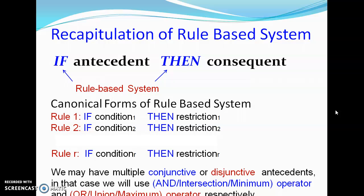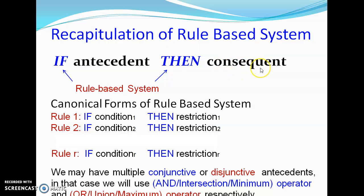To recapitulate what we learned from the previous class, we are now aware of the if-then rule-based system. The 'if' part is associated with the antecedent part and the 'then' part is associated with the consequent part. For example, if the temperature is 20 degrees, that is the antecedent part, then fan speed is low — that is the consequent part.